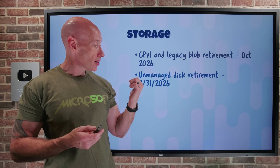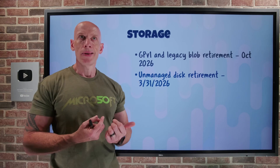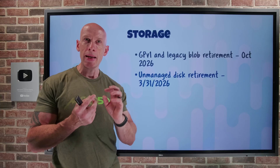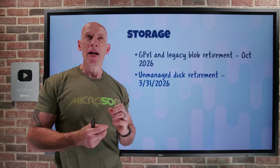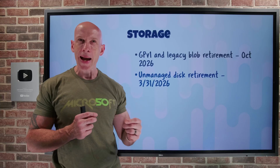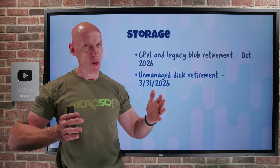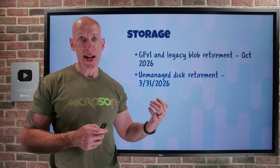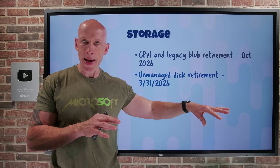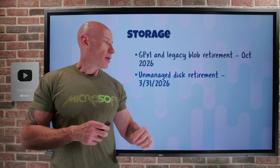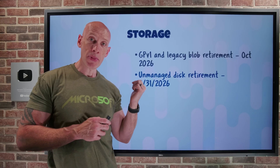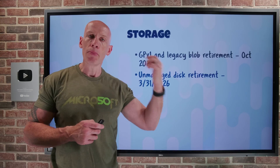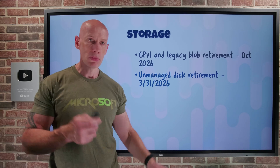Unmanaged disks are being retired in six months' time. This was the original disk type for virtual machines — it sat on top of a page blob, and there was management needed around how many you had per storage account because of IOPS limits. You want to use managed disks today, which abstract away any underlying storage. This date was pushed — it was originally September 2025 — but now you have another six months. Move to managed disks because those unmanaged disks are going away.